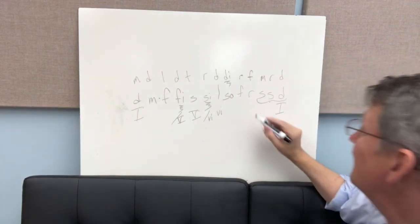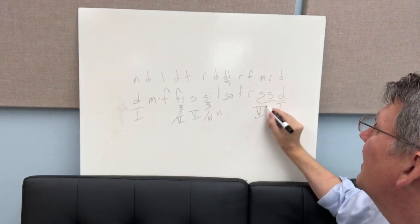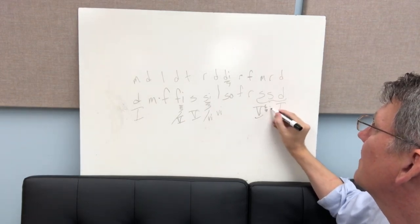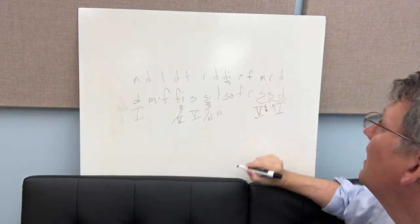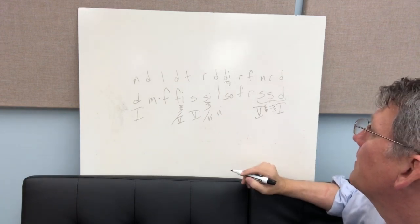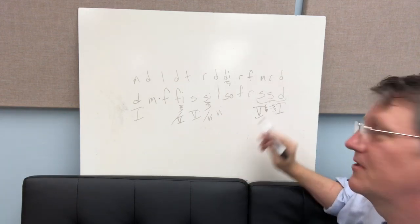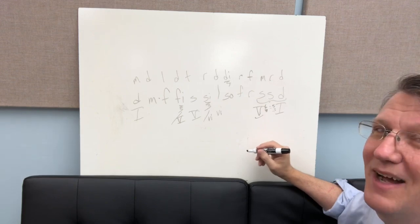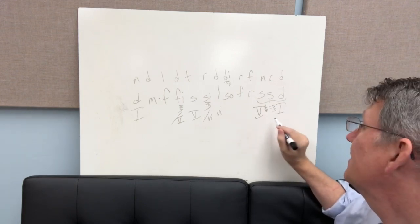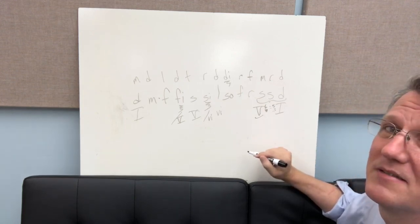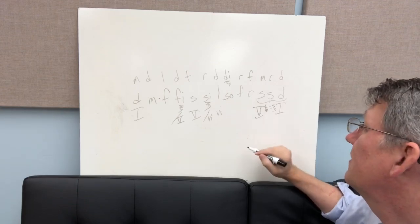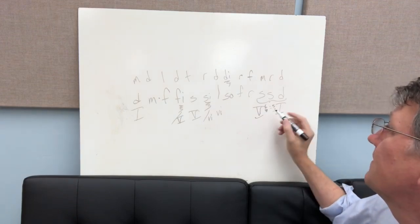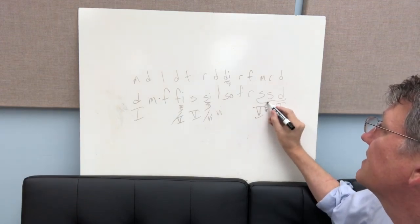A cadential six-four. Yeah, that's going to be a five six-four going to five-three, and then one. That's as much as we can guess just knowing that. But did you happen to hear the quality of that penultimate chord, the five chord?